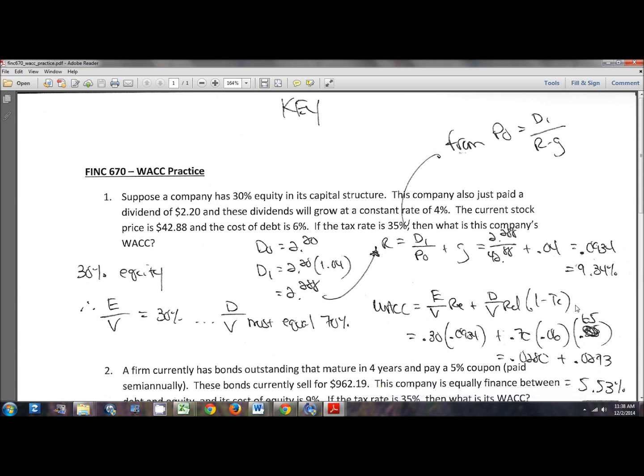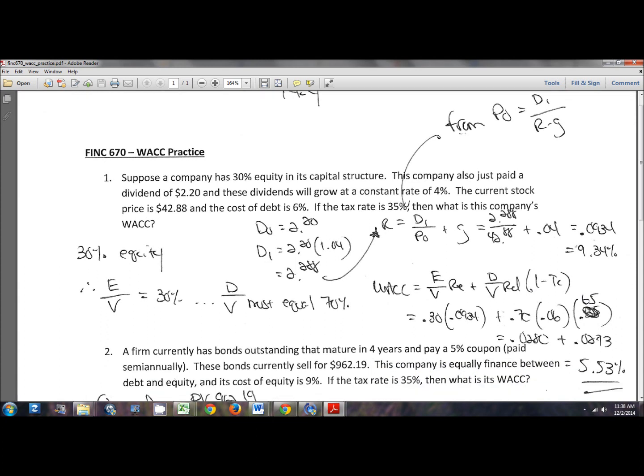Once you have that in place, you can then plug right into the WACC equation, which is right here, which is exactly like what you saw in the WACC introduction video. So my E over V is 30%, my cost of equity is 0.0934, my D over V is 70%, my cost of debt is 0.06, and my 1 minus T is 0.65. I had mistakenly written it in originally at 0.35. That is obviously not correct. It is 1 minus 0.35, which is 0.65.